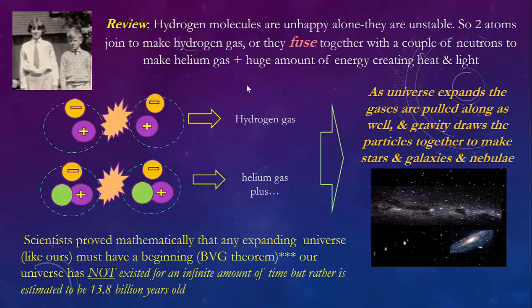The first element formed was hydrogen. After you've created protons and neutrons, you have an element of hydrogen, but that element of hydrogen is unhappy all by itself — it's unstable. So it has two choices: one, it can take two of them and that's what ends up as hydrogen gas. Or what can happen is you can have the hydrogen add one neutron and then double that, so the two of them come together and become helium gas.